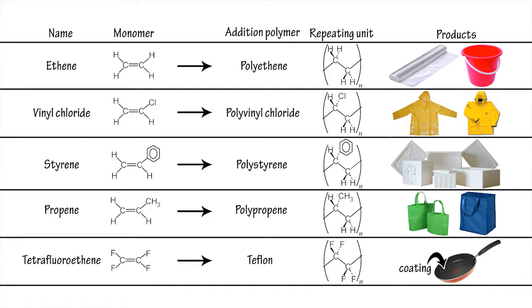The plastic materials that result from these different polymers have distinctive properties that lend themselves to use in a wide variety of products, from plastic packaging and containers, through to clothing and non-stick fry pans.